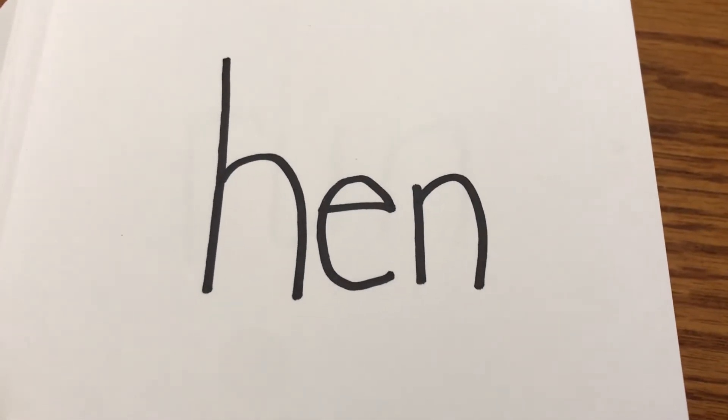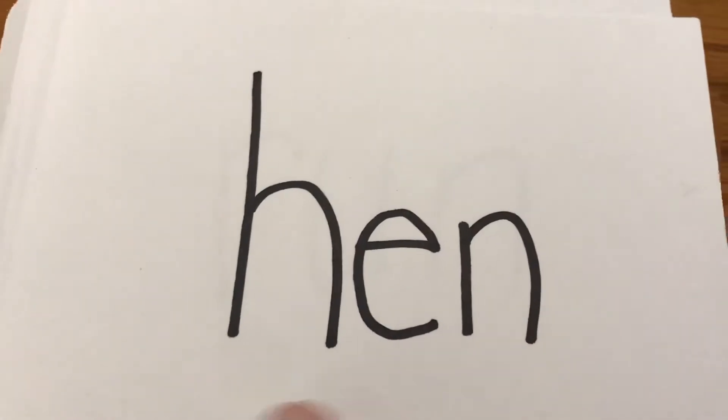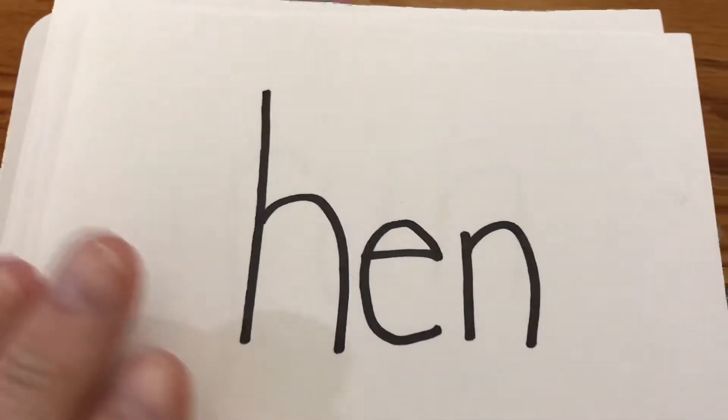Boys and girls, we're gonna do some blending. You know how to do that. So first we'll say all the sounds and then we'll read the word. Ready? H-e-n. Hen. That's a girl chicken.